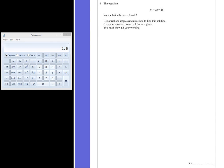Question 8. The equation x³ - 3x = 15 has a solution between 2 and 3. Use a trial improvement method to find this solution. Give your answer correct to one decimal place. You must show all your working.